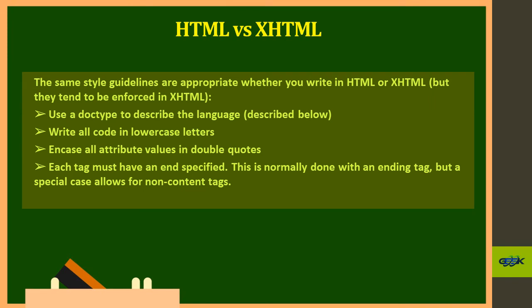In XHTML you must use the DOCTYPE to define the document type. You must write all letters in lowercase, even though HTML is not case-sensitive. All attribute values must be in double quotes, and every tag must have an end tag. Following these rules makes it easier for anyone who later edits your code. In production environments in the IT industry, these rules make future editing easier. This strict rule-following is the main difference between HTML and XHTML.